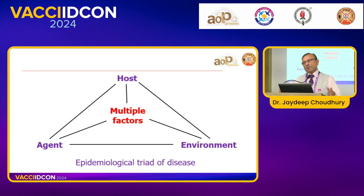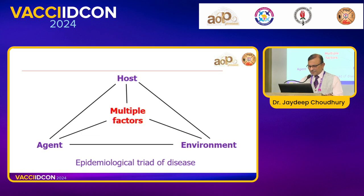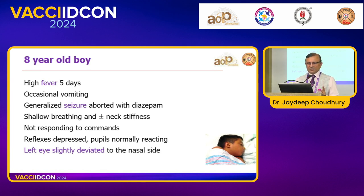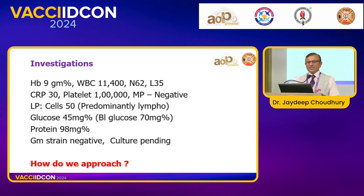We will start with some cases. This is an eight-year-old boy who had high fever for five days with occasional vomiting. The child had a generalized seizure; diazepam controlled it. On presentation he had shallow breathing, neck stiffness, was not responding to commands, reflexes were depressed, pupils were normally reacting, but the left eye was slightly deviated to the nasal side. Investigations: hemoglobin 9, WBC normal at 11,000, CRP 30, platelets 1 lakh, malaria negative.